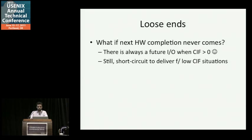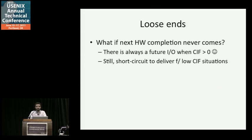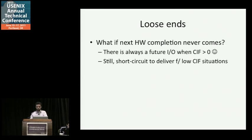We're using hardware completions to fire virtual interrupts. You might wonder — what if the next hardware completion we want to piggyback on never comes? That's a real problem in networking. In storage, there's always a future I/O that will arrive as long as commands in flight is greater than zero, because there's a command in flight that you know will complete. For error cases and other situations, we deal with that by short-circuiting to deliver for low commands-in-flight situations. If you have one, two, or three commands in flight, depending upon dynamically settable parameters, we simply don't coalesce at that point.